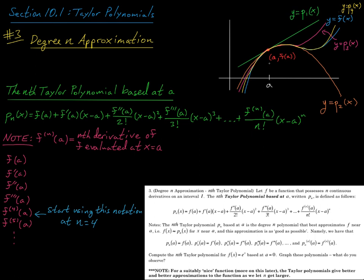Those three conditions were: first, we wanted our parabola to pass through the point (a, f(a)) — that's where f(a) comes from. We also wanted the slope of the parabola to equal the slope of the blue curve at that point — that's where f′(a) comes from. And we wanted the concavity, controlled by the second derivative, of p2 to match the concavity of the blue curve at that point — that's where f″(a)/2! comes from.